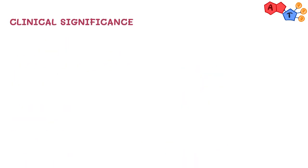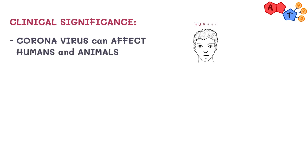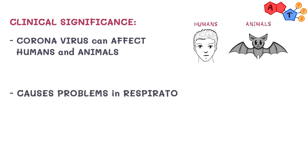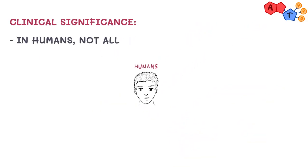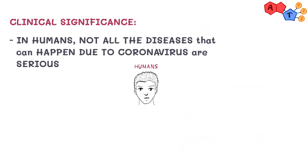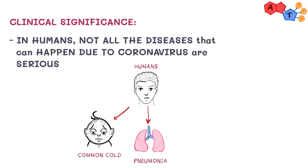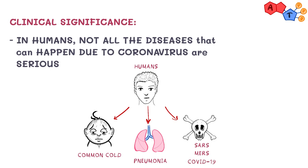For the clinical significance, coronavirus can affect both humans and animals, causing many problems mainly in the respiratory and GI systems. Many coronavirus strains that cause diseases have been discovered. In humans, not all diseases caused by coronavirus are serious. Coronavirus can cause common cold, pneumonia — which is inflammation of the lung — or more severe conditions such as severe acute respiratory syndrome (SARS), Middle East respiratory syndrome (MERS), and coronavirus disease 2019, known as COVID-19, which is what we're dealing with right now.